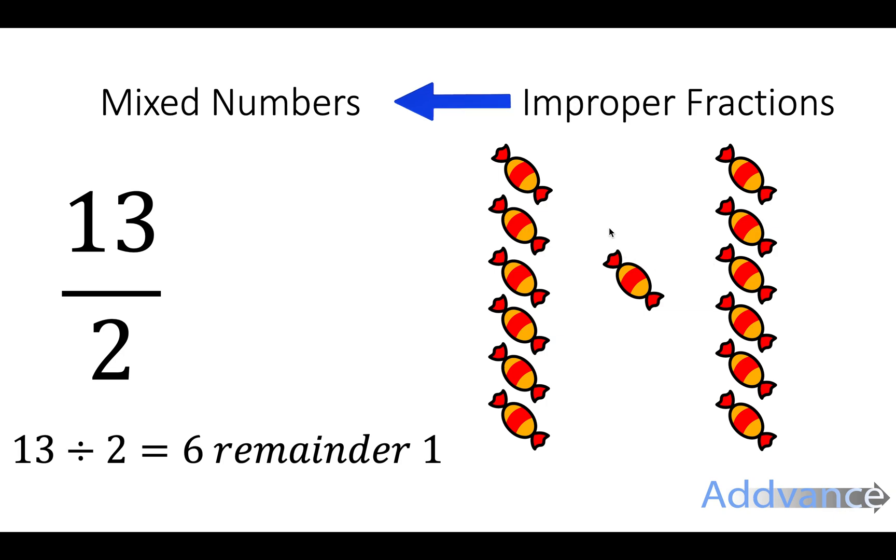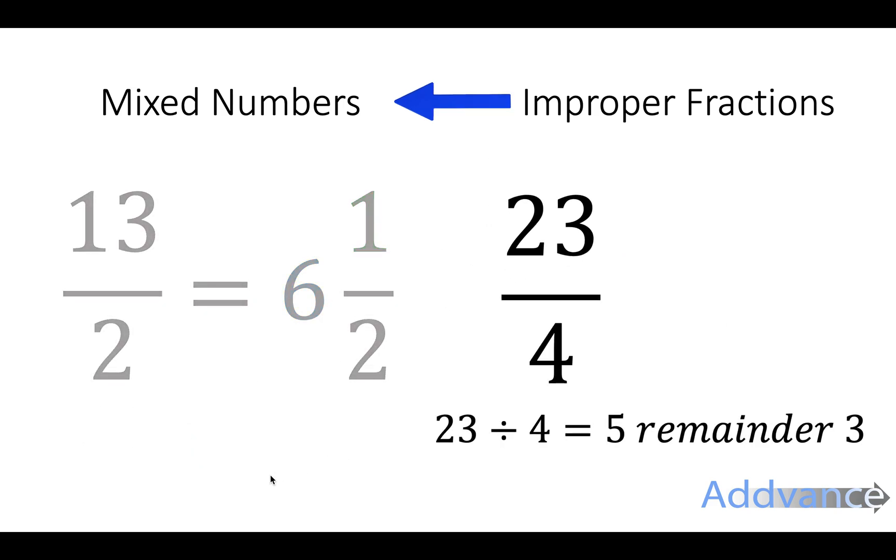You can see this with these sweets over here. I split them into two equal piles of 6 with a remainder of 1. So we write 6 as a big number and then 1 as the numerator over 2. The bottom number stays the same.